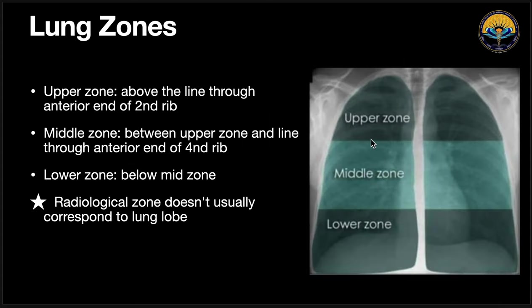Coming to the lung zones: the first two anterior ribs above define the upper zone. From the second to the fourth rib we have the middle zone, and below the fourth rib we have the lower zone. So the upper zone is up to the level of the second rib, the middle zone is from the second to the fourth rib, and the lower zone is below the fourth rib.